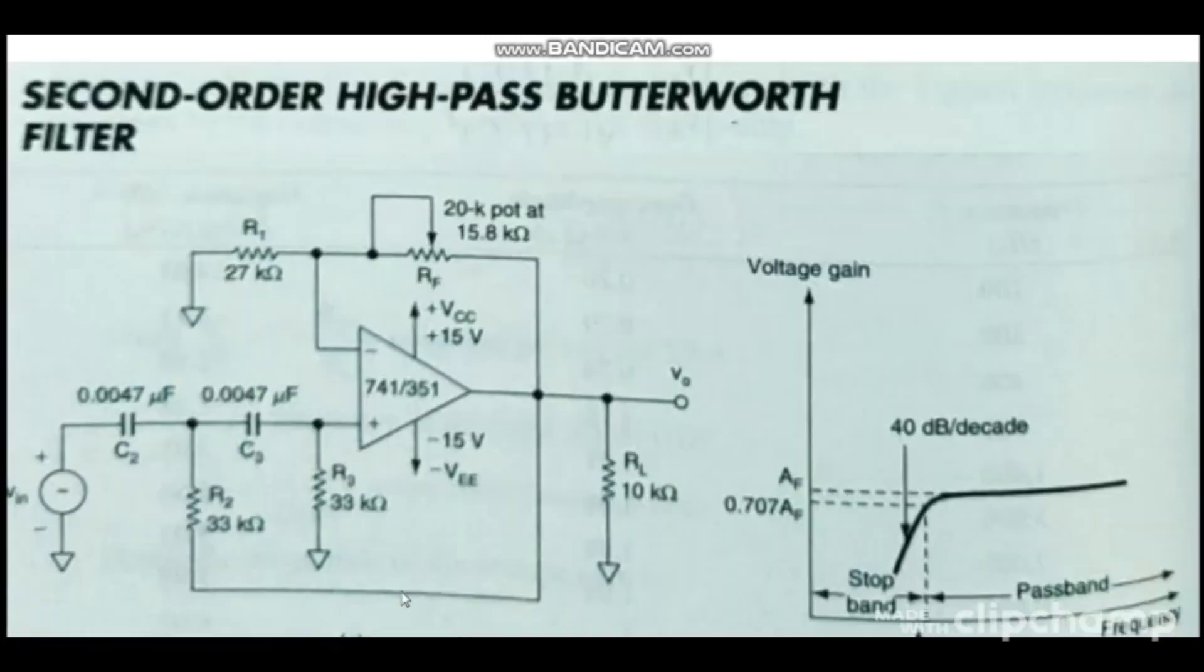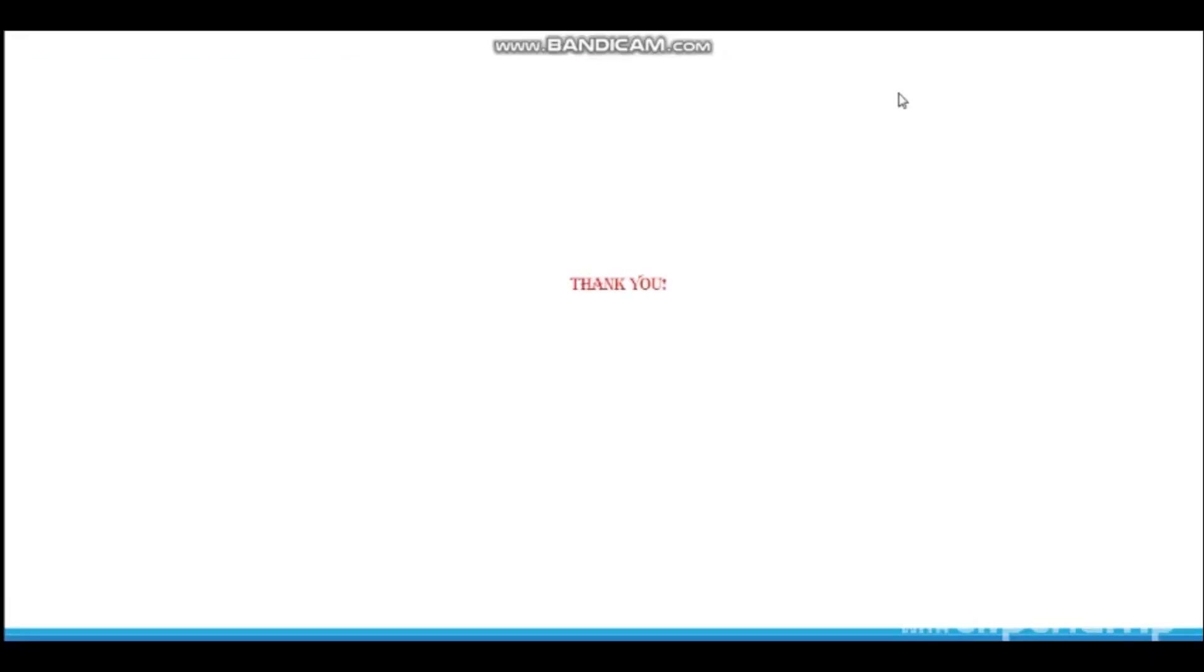And again, second order high pass filter. We have another RC or CR network, whatever you can say, and that's the only difference from the first order high pass filter. Again here from the frequency response, the roll-off rate is 40 dB per decade because it is second order high pass filter.